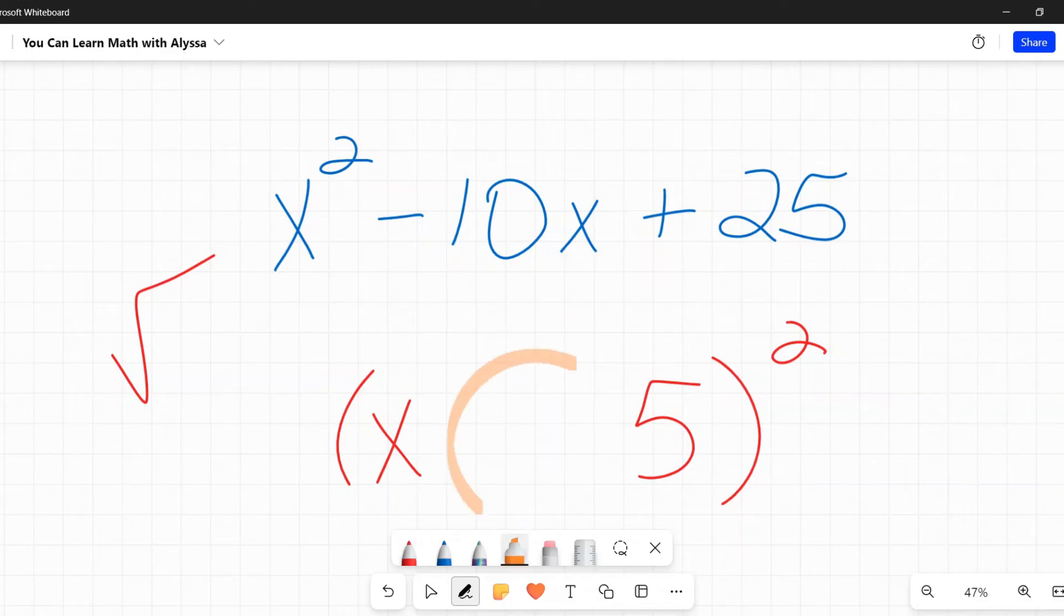Then I look at the last one, 25. What's the square root of 25? It is 5. Notice I did not write positive or negative because the square root of 25 could be positive or negative 5. But you figure this out by looking right here at that sign. Whatever that sign is, that's the sign that goes right there. In this case, it's a negative. Now let's check and make sure this works.